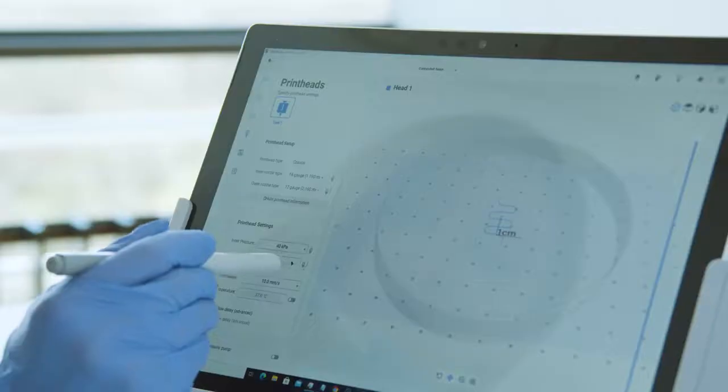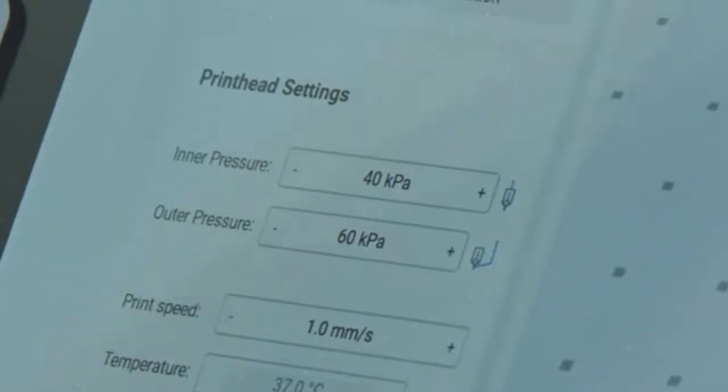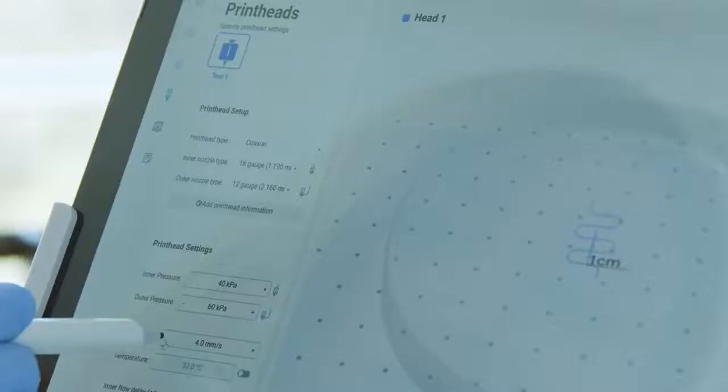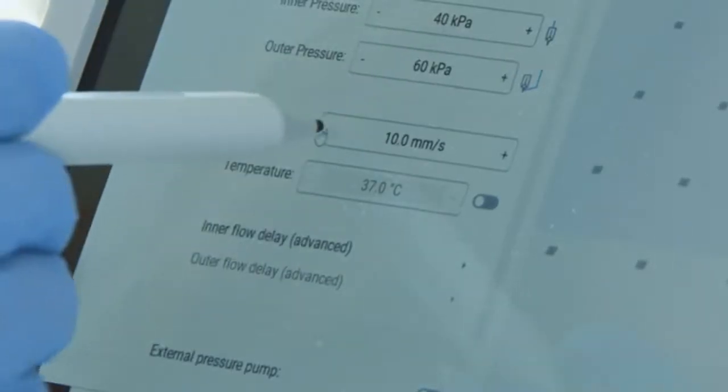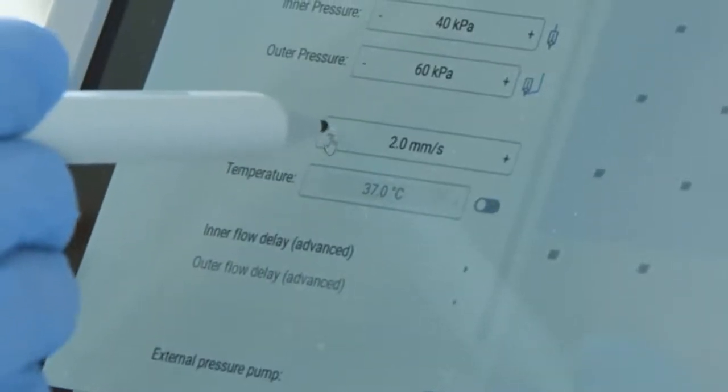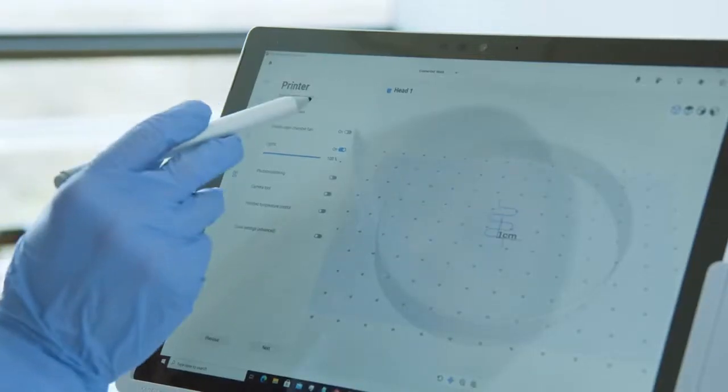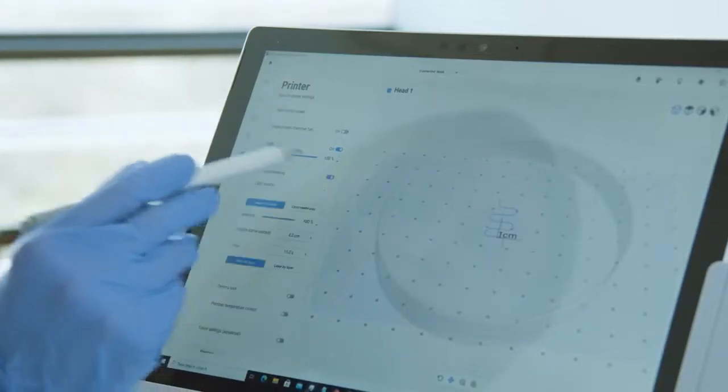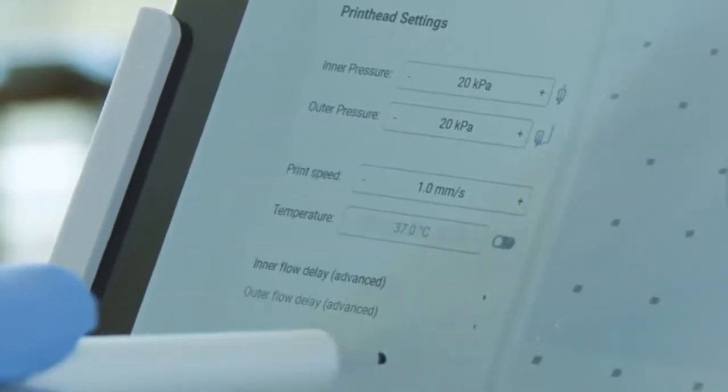Here you can adjust the pressure for inner and outer nozzles. Then adjust the print speed. I recommend you to start from low print speed, usually one or two millimeters per second works well for different bioinks. Meanwhile you can further adjust during the bioprinting process as well. You can also adjust the temperature here.